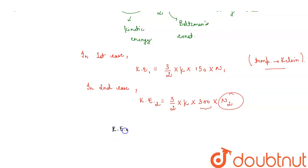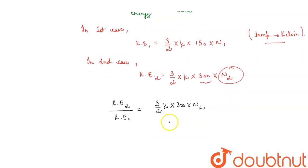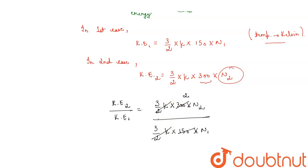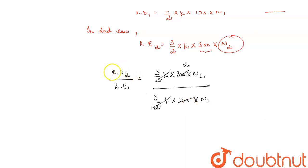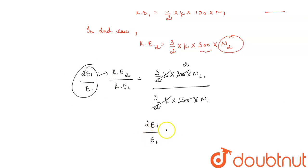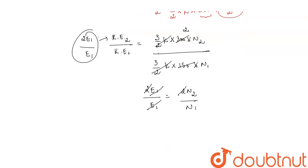Moving forward, KE2 divided by KE1 equals [(3/2) × k × 300 × N2] divided by [(3/2) × k × 150 × N1]. The (3/2)k terms cancel out, and 150 and 300 simplify to give a factor of 2. We also know KE2 = 2E1 ergs and KE1 = E1 ergs. So 2E1 / E1 = 2N2 / N1, which gives 2 = 2N2/N1. The 2s and E1s cancel, yielding N1 = N2.